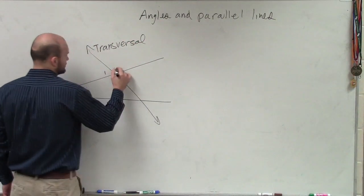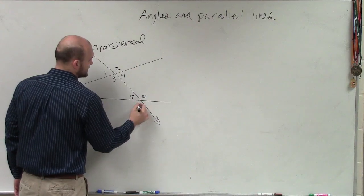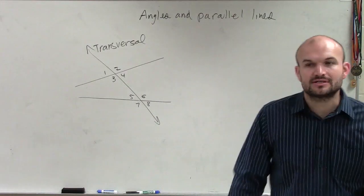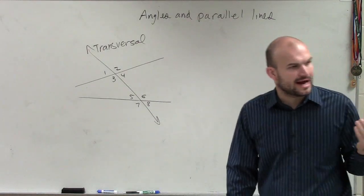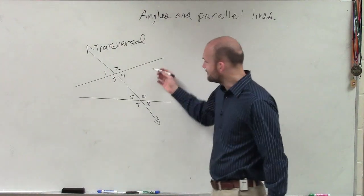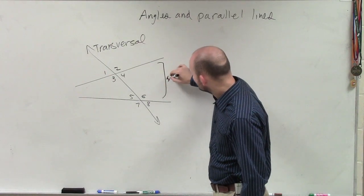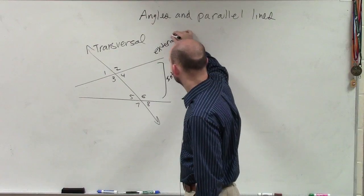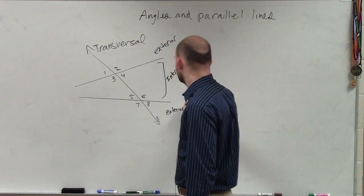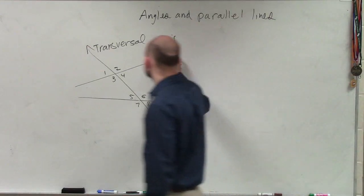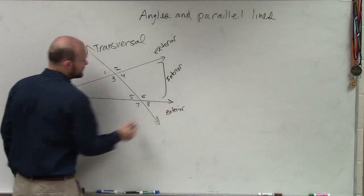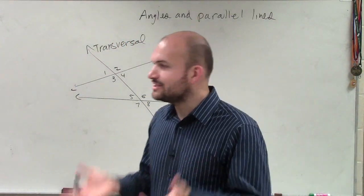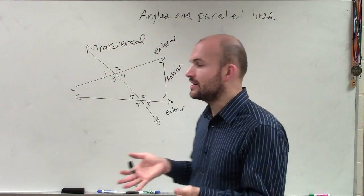We had angle 1, 2, 3, 4, 5, 6, 7, 8. And then we talked about a certain type — we have a lot of different ones now. So the other thing we talked about is we have interior angles, right? And then we have exterior. You guys remember when we had our two lines and then we had a transversal? When we had that transversal, it created kind of two intersecting lines, and we had interior and exterior.